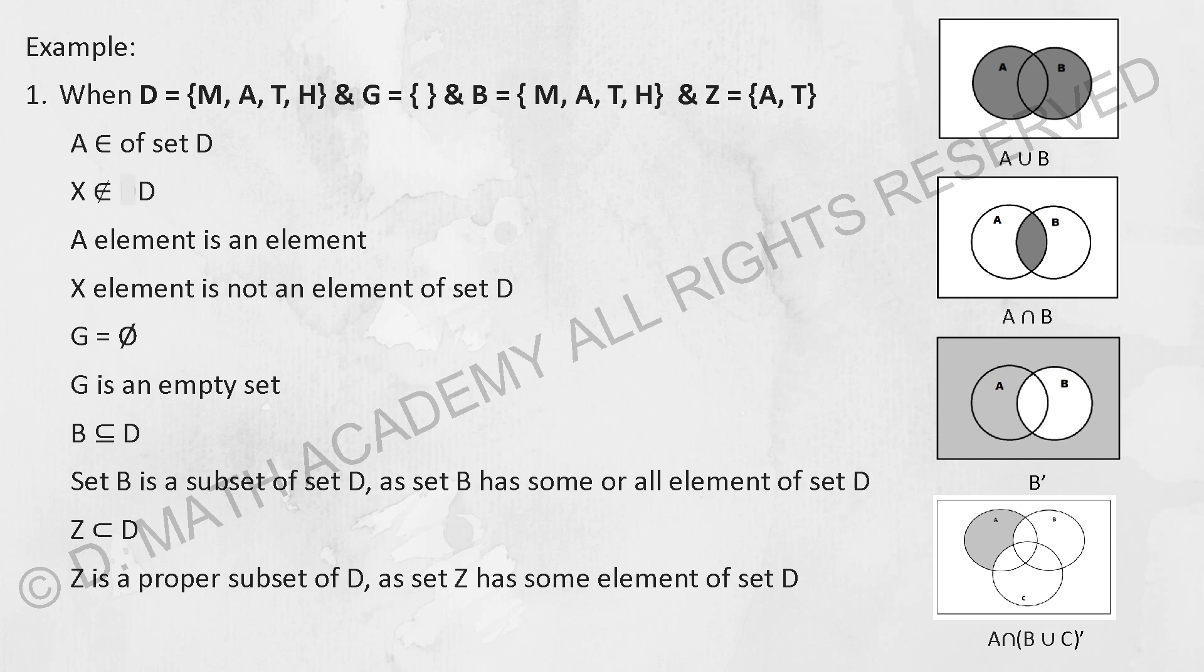G equals to the empty set. So there's two ways to represent that. B is actually a subset and equals to D. So B and D is the same.